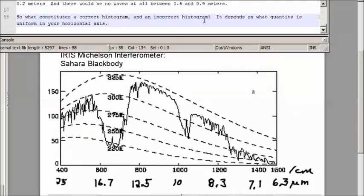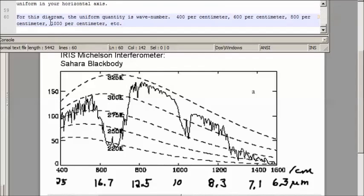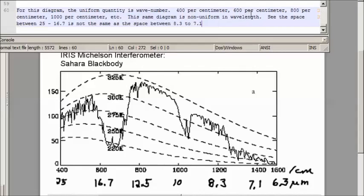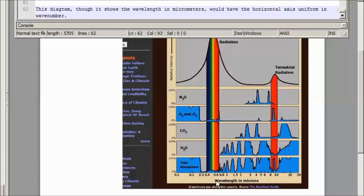So what constitutes a correct histogram and an incorrect histogram? It depends on what quantity is uniform in your horizontal axis. For this diagram, the uniform quantity is wavenumber: 400 cm, 600 cm, 800 cm, 1000 cm, 1200 cm, etc. This same diagram is non-uniform in wavelength. See the space between 25 to 16.7, or the difference between 25 and 16.7 is not the same as the difference between 8.3 and 7.1 micrometers. This diagram, on the other hand, though it shows the wavelength in micrometers, it's not uniform in micrometers. The distance between 1 and 2 is not the same as the distance between 2 and 3, 3 and 4, 4 and 5, 5 and 6. This would be, probably, uniform in wavenumber.